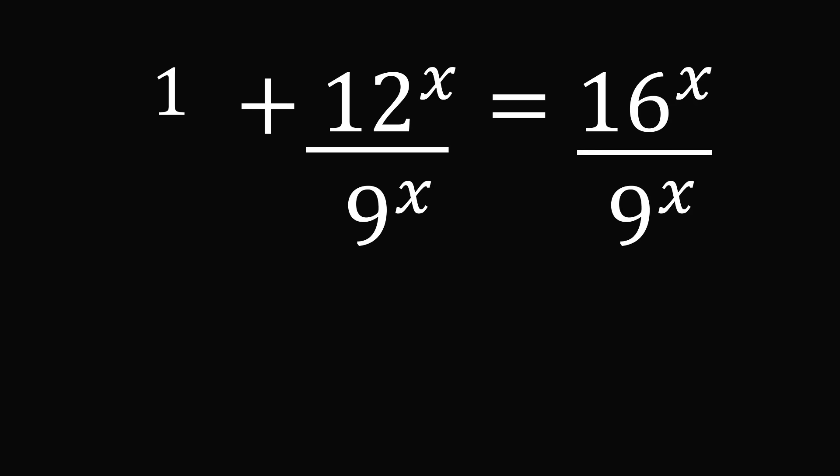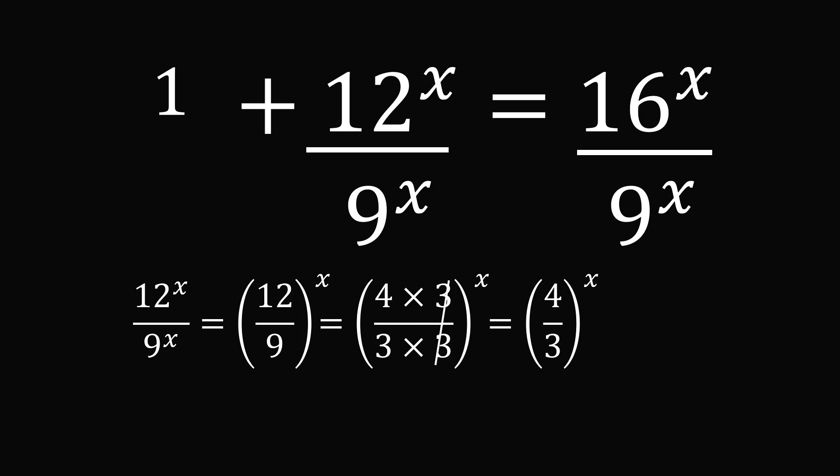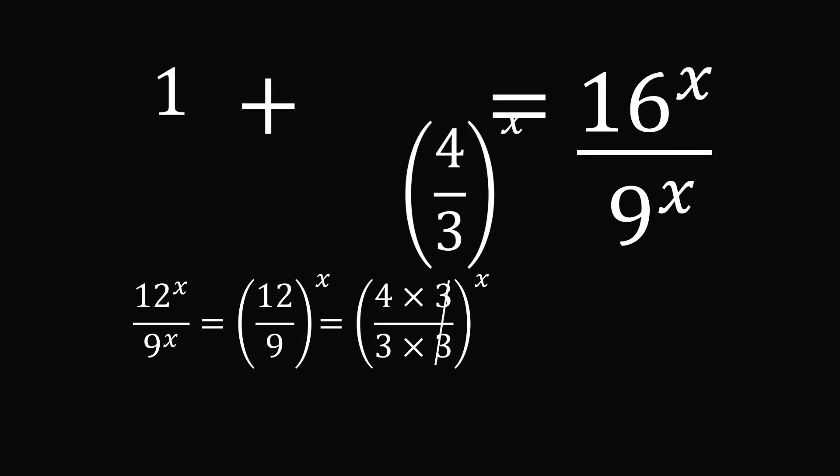What is 12^x divided by 9^x? We can group this as a fraction (12/9)^x. 12 can be factored as 4 × 3, and 9 equals 3 × 3. So we can eliminate this common factor of 3. This is equal to (4/3)^x. Let's substitute this term in for 12^x divided by 9^x. So the second term is (4/3)^x.